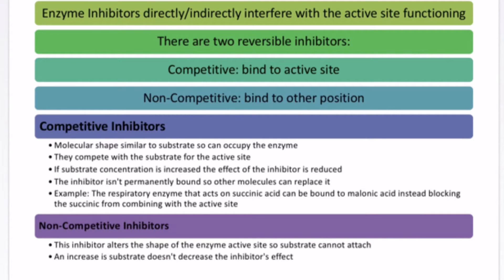The inhibitor isn't permanently there — it is reversible. For example, the respiratory enzyme that acts on succinic acid can be inhibited by malonic acid in this way. Non-competitive inhibitors are different: they do not compete with the substrate for the active site. Instead, they bind to the enzyme away from the active site, which changes the enzyme's shape and reduces the number of active enzyme molecules, thereby inhibiting activity without any competition for the active site.